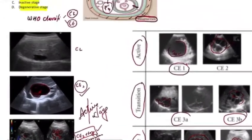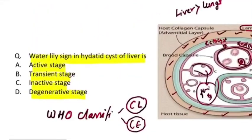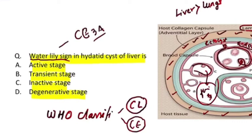Coming back to the question — the water lily sign in hydatid cyst of liver is seen in CE3A, and this is the transitional stage. So the answer is the transient stage.